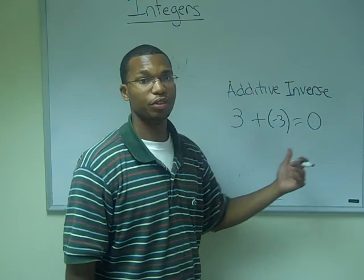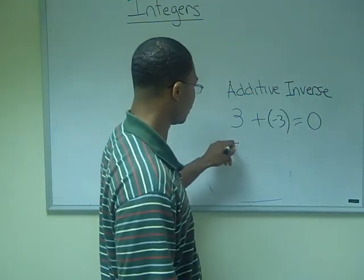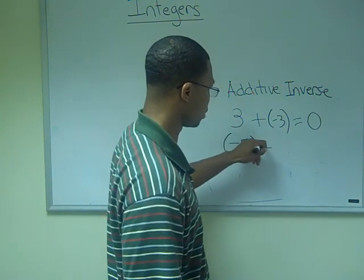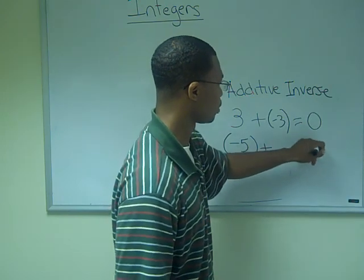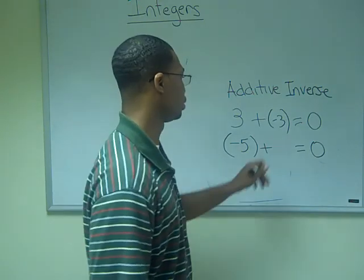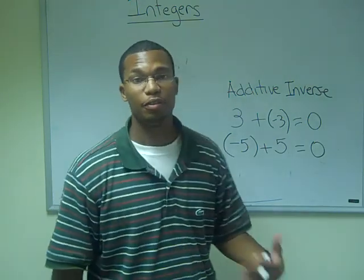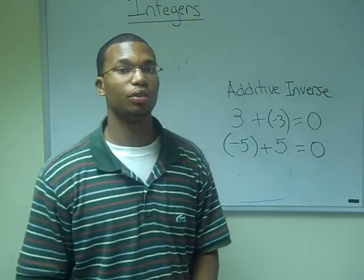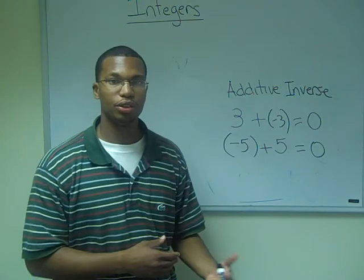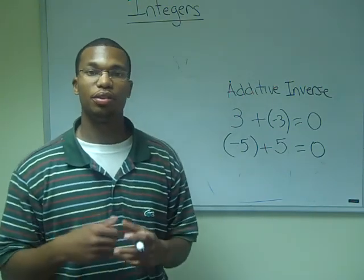So therefore, three plus negative three is zero. So the additive inverse of positive three would be negative three. Let's look at negative five. Well the additive inverse of negative five would be positive five. So therefore, negative five plus positive five equals zero. Now let's go back to the integers. Well the integers are the whole numbers with the inclusion of their additive inverses. So some examples of the integers would be...